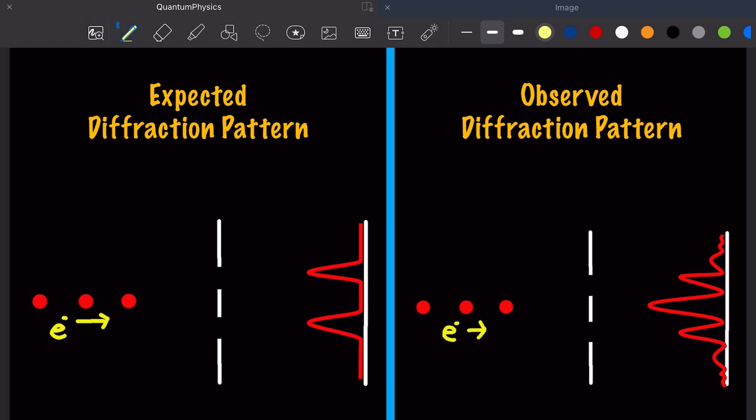Young's double slit experiment showed that when electrons were shot through two slits, they weren't just detected at the two points opposite the slits. Instead, the electrons formed a double slit diffraction pattern, indicating that when they went through the slits, they behaved as a wave.